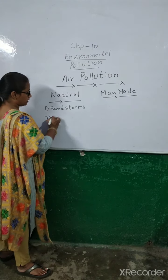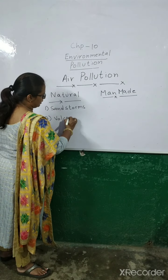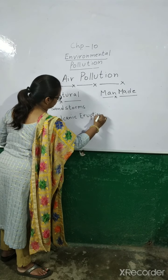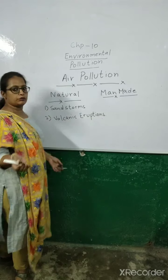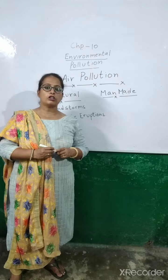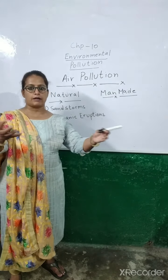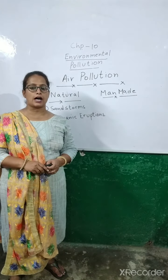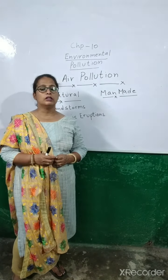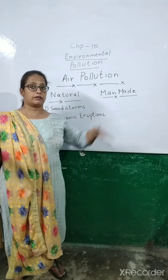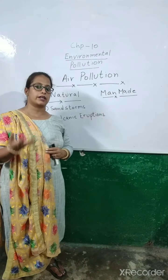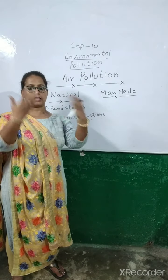Next is the volcanic eruption. You may have seen it in movies — a lot of lava comes out of volcanoes. Volcanoes are basically found in places like Japan. They are a kind of hills, and when they get erupted, all that lava comes out.